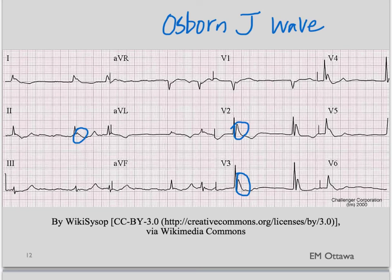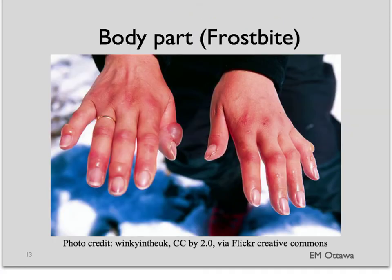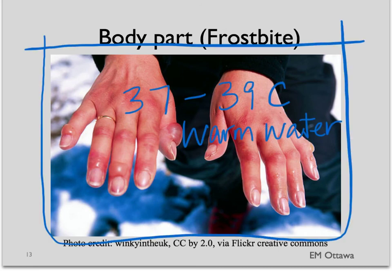You would also want to do an ECG to see if you can capture any arrhythmias. If the patient only has a frostbite extremity, the affected part should be immersed in warm water at about 37 to 39 degrees Celsius. Pain medication should be given since re-warming can be very painful. You might need to consult a plastic surgeon for debridement and other treatment.